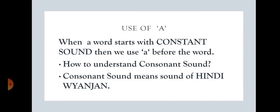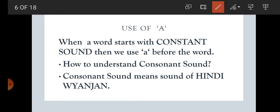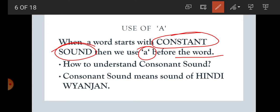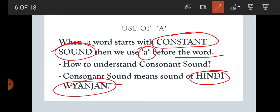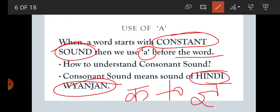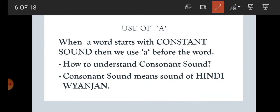Next: what is the use of A? When do we put A? When a word starts with a consonant sound, we use A before the word. Now, how do we understand consonant sound? Consonant sound means the Hindi vyanjan sound. Hindi vyanjan starts from Ka to Gya. So if there is a sound like Ka to Gya, we will put A before the word. With the help of examples, we will make it clear.